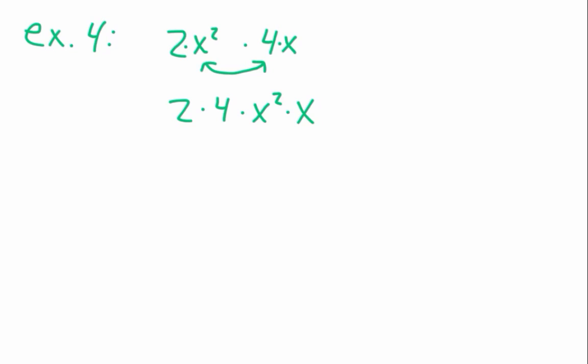And then 2 times 4 is 8. You have to be a little careful. You add exponents, but you multiply the numbers. You have to keep it straight. It's easy to make that mistake. 2 times 4 is 8, and x squared times x to the 1st just is x to the 3rd.